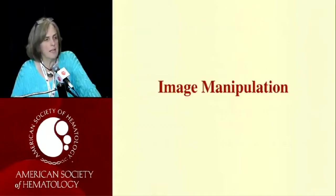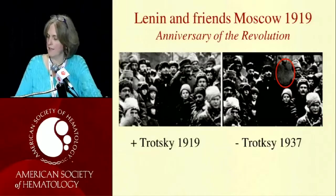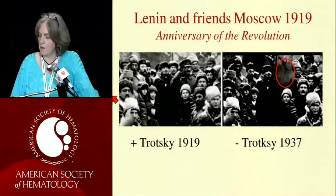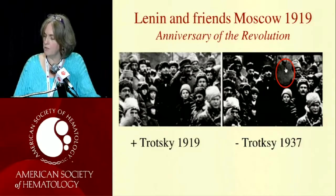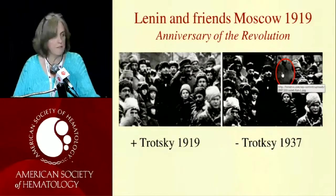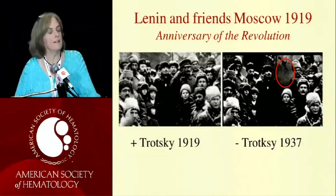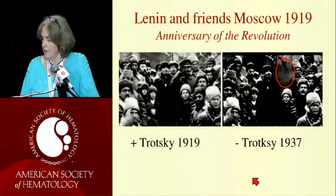Image manipulation is not a new problem. This picture was taken of the leaders of the revolution in 1919, showing Trotsky in the middle. Then in 1937, he became politically undesirable and they simply removed him from the picture. It was harder to do back then, but now it's gotten very easy — and that doesn't mean that you should do it.